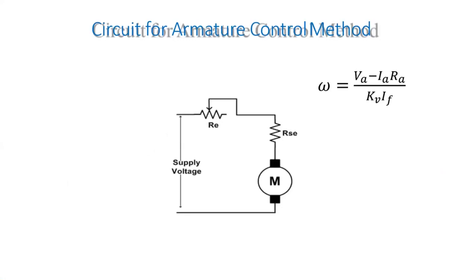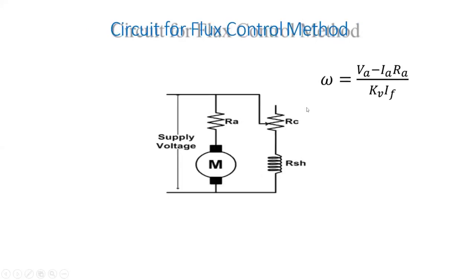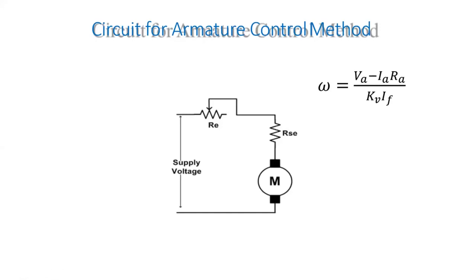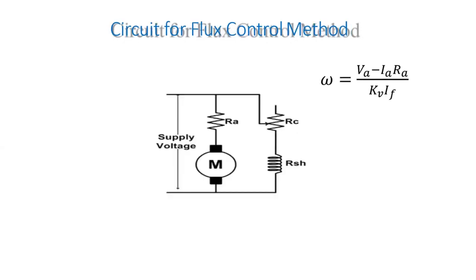In the armature voltage control circuit, a variable resistance is connected in series with the armature of the DC motor. By changing the value of this resistance, we change the supply voltage applied to the armature winding. The speed equation ω = (VA − IaRa) / (Ka × IF) shows that varying VA changes the speed — that is the armature control method.